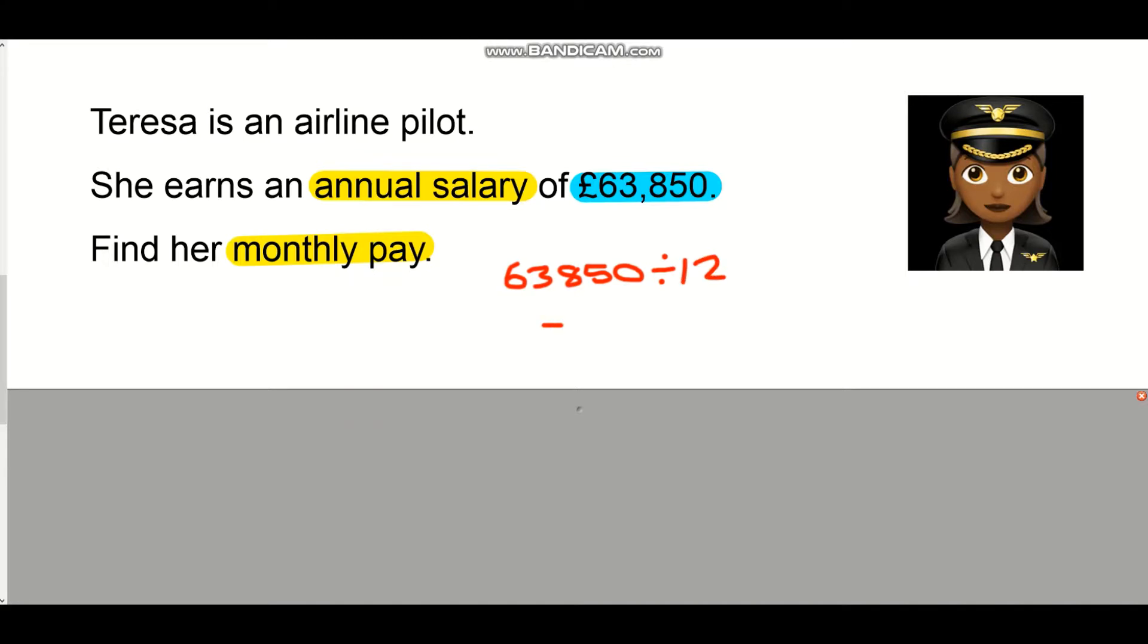Because we're working with a calculator, we're going to calculate this and divide to two decimal places because we're working with money and there's never any more than two decimal places on the end of a money question. So our final answer is £5,320.83, and that's how much Teresa will make every month before tax.